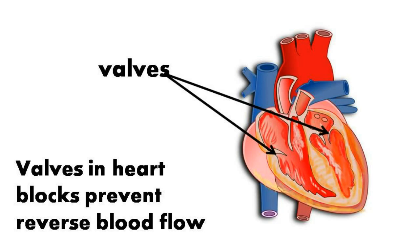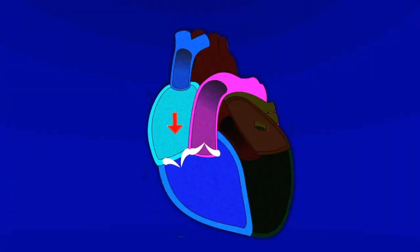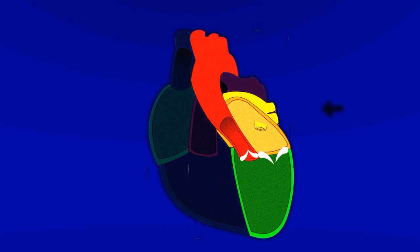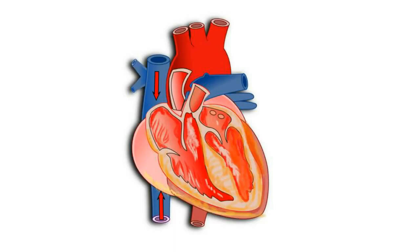which open towards the ventricle only. So when the ventricle is contracting, pressure pushes the blood into the arteries, as blood cannot go back to the auricles. Now the second question: why do we need four chambers? Blood supplies oxygen, food, etc. to different organs and returns to the right atrium,